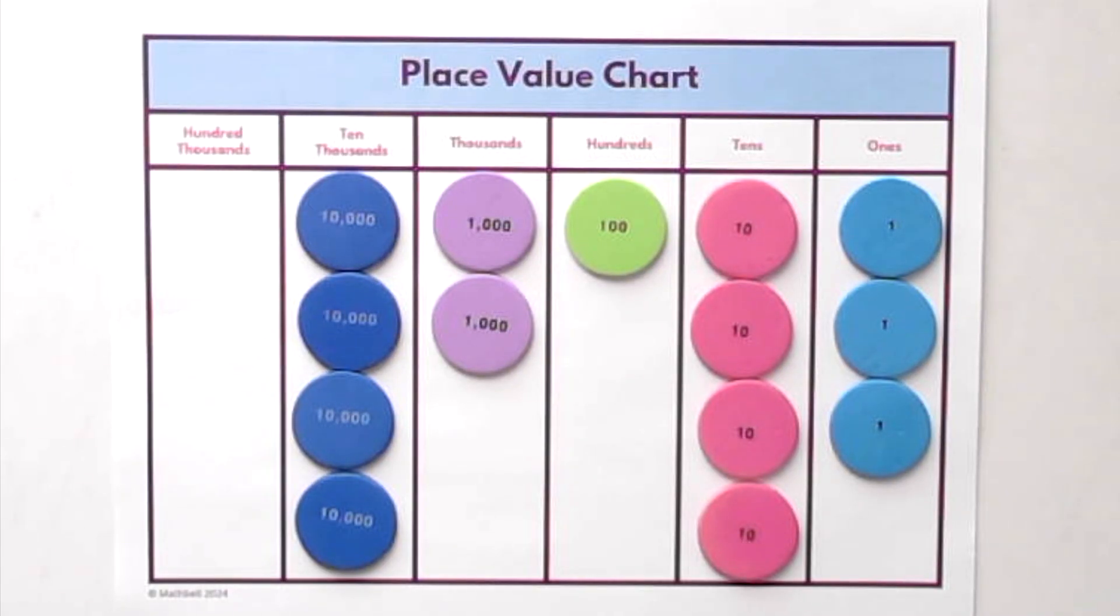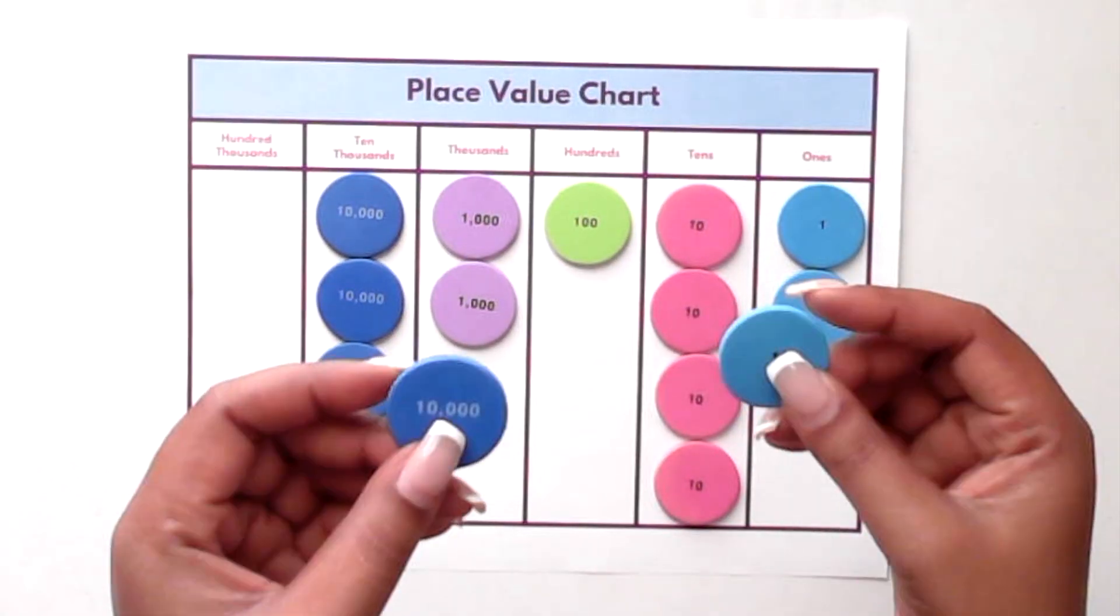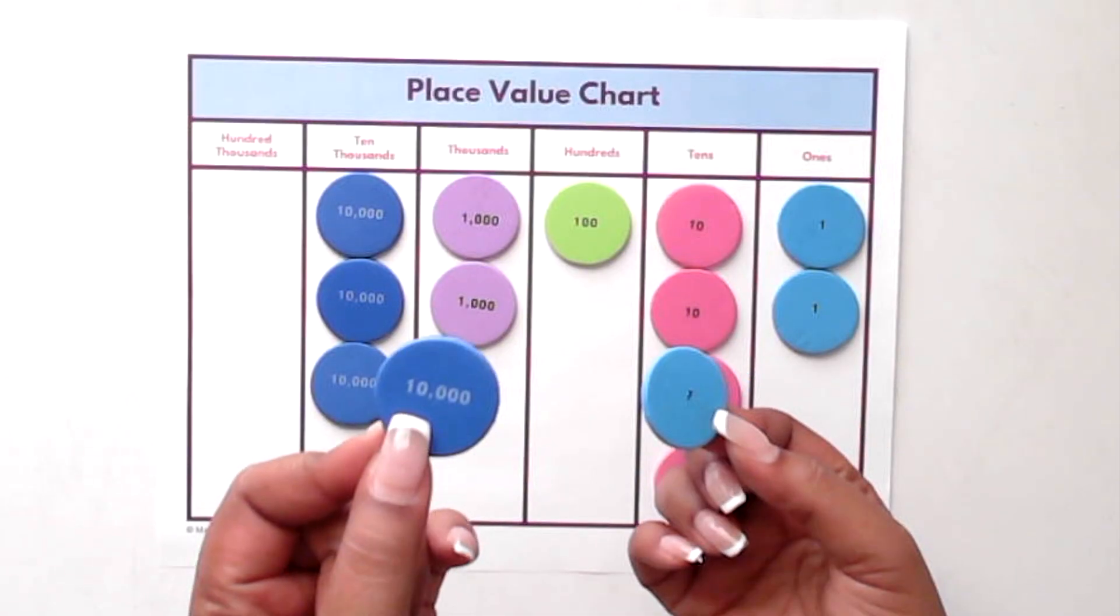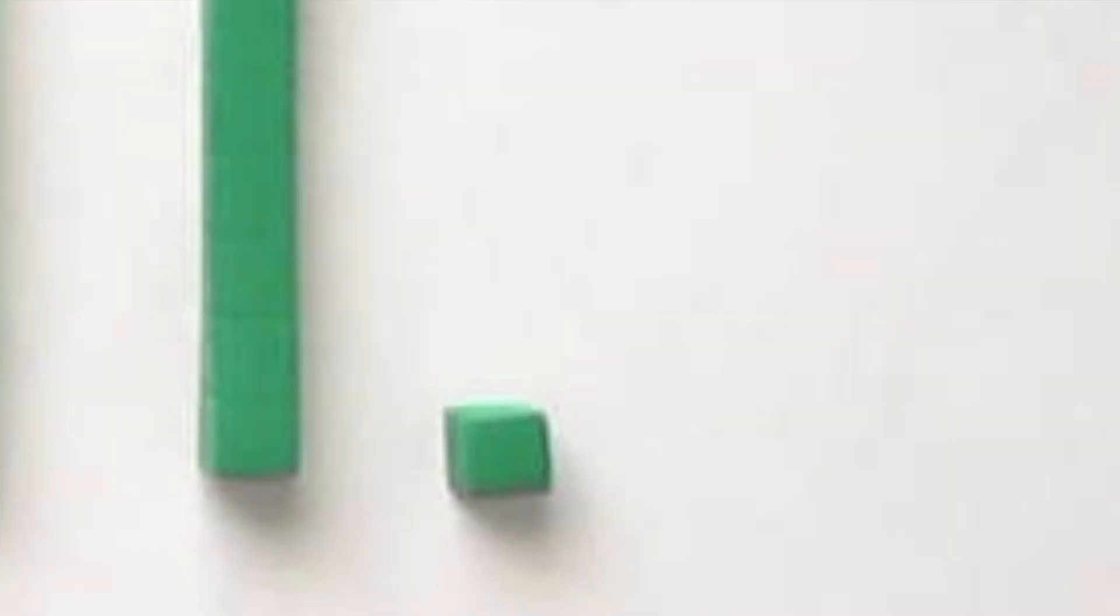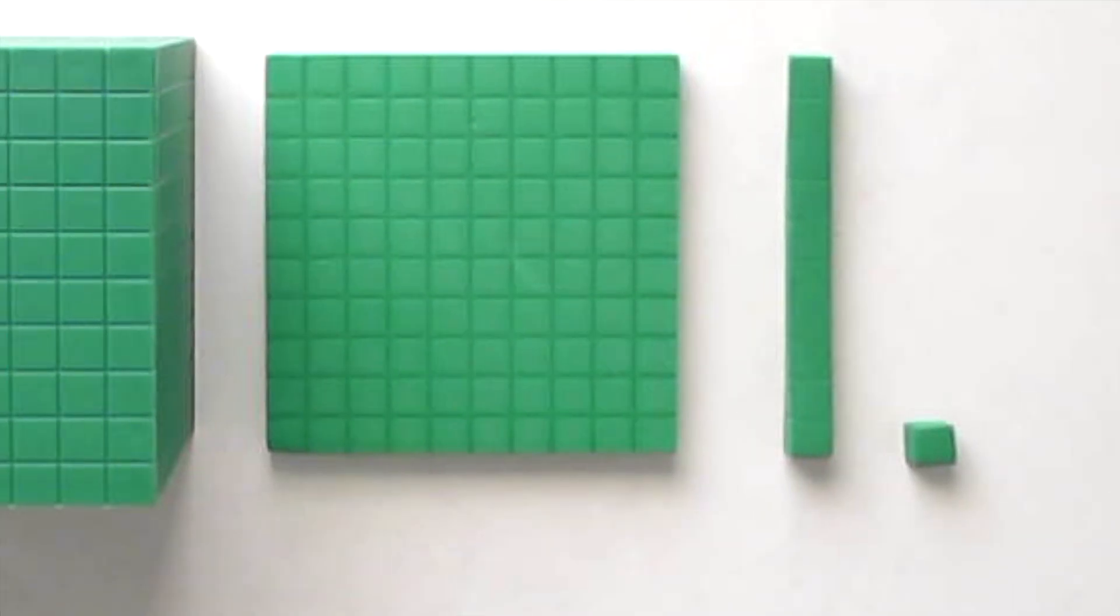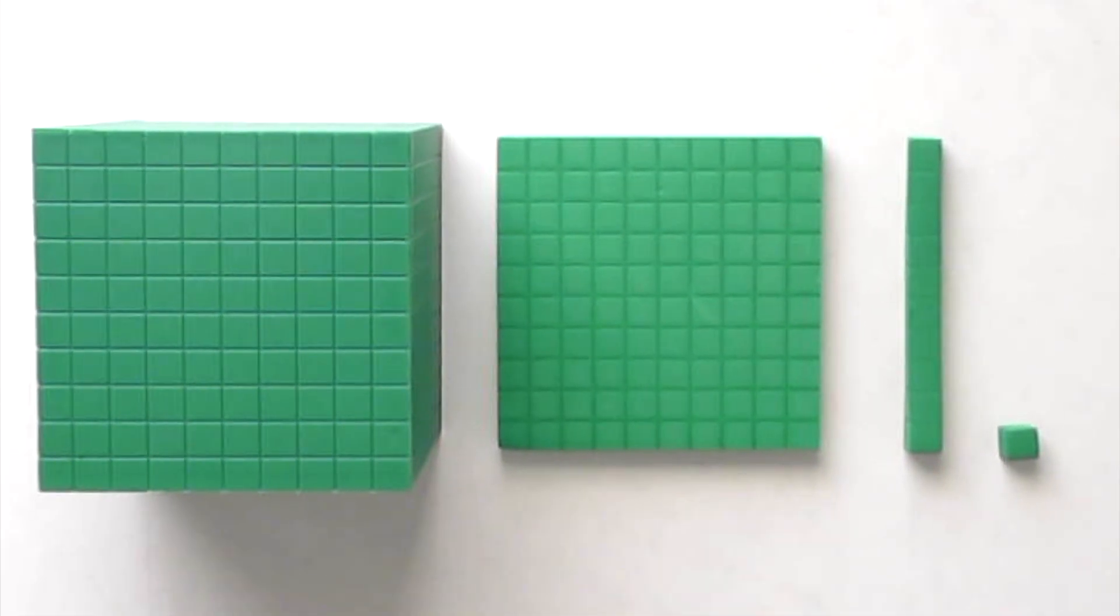Other tools like place value disks can also be useful, especially when students are ready for more abstract thinking. But since the disks all have the same size, students have to rely on the labels alone. With place value blocks, the size relationships help students see that each place value is 10 times greater than the place before it.